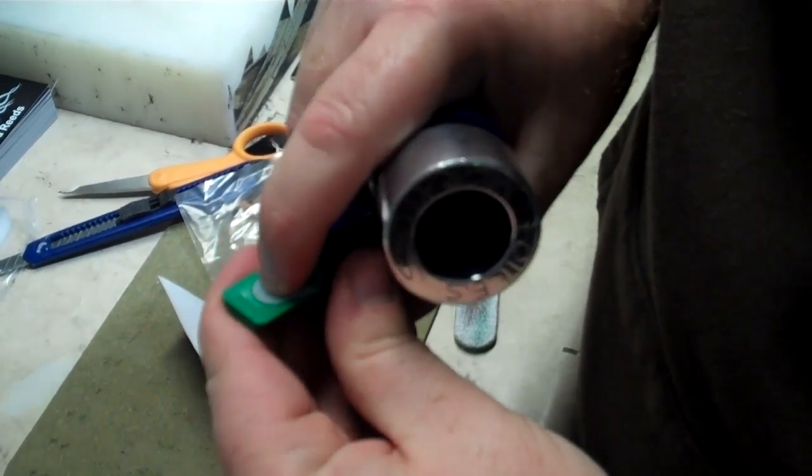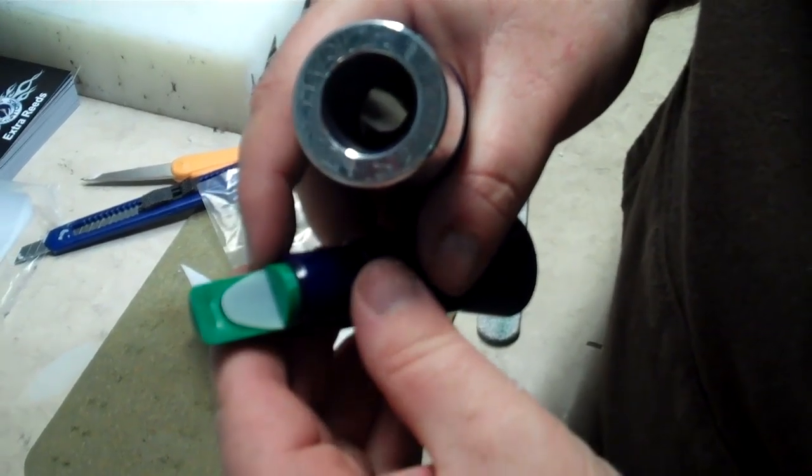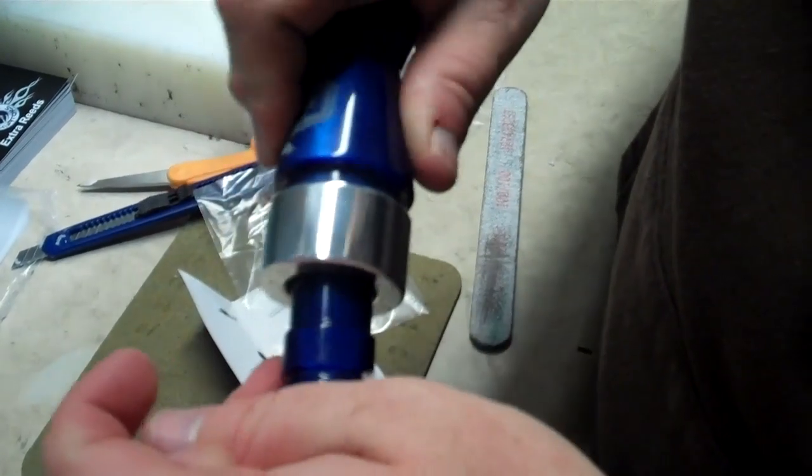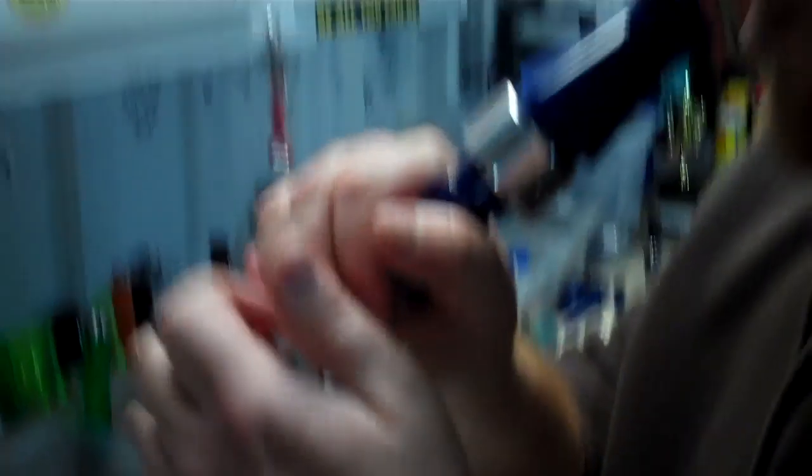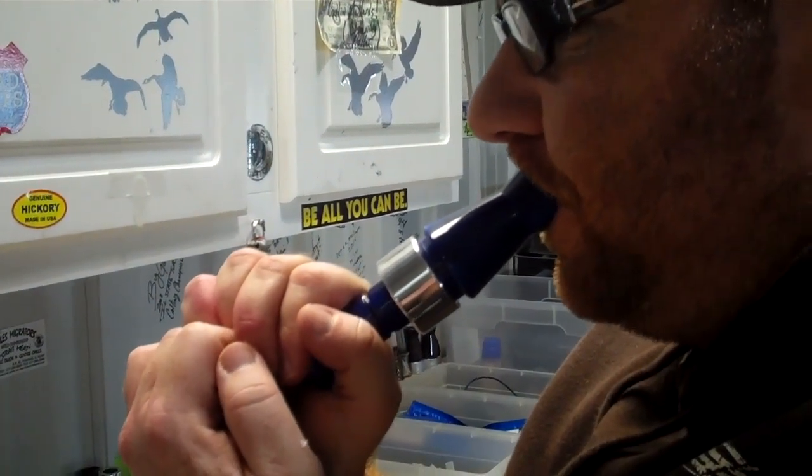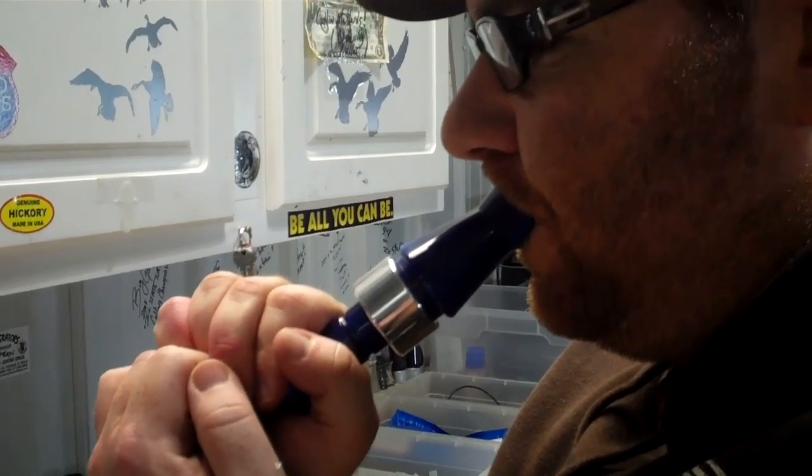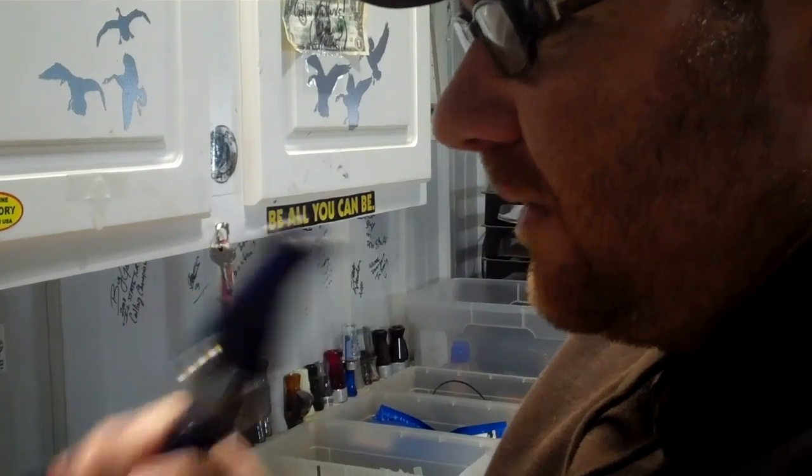Pull our tone board up just a tiny bit, because we were hitting against there. This call should be good to go right now. That's how you tune a short reed goose call.